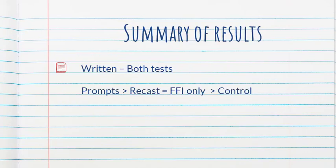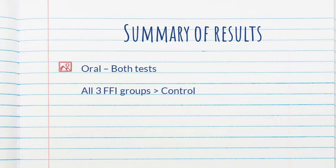Now let's look at the results. For the written test, prompts did better than everybody else, and the control group did the worst. In the middle, the recast group and the explicit instruction group did about the same — so you could say that recast was about the same as no feedback. For the oral task, all three groups that received explicit instruction, regardless of feedback, did better than the control group, but there were no significant differences between feedback groups.